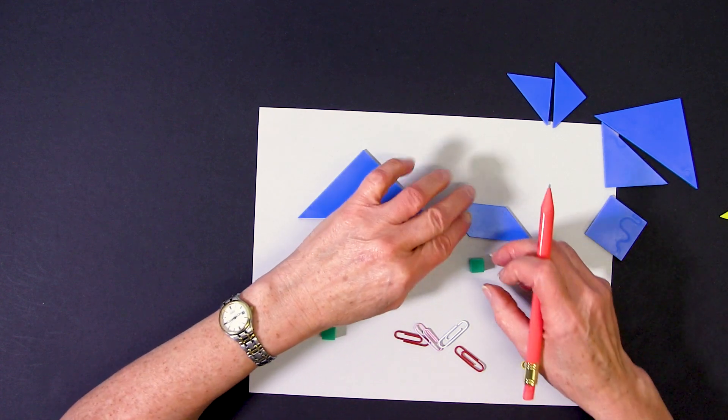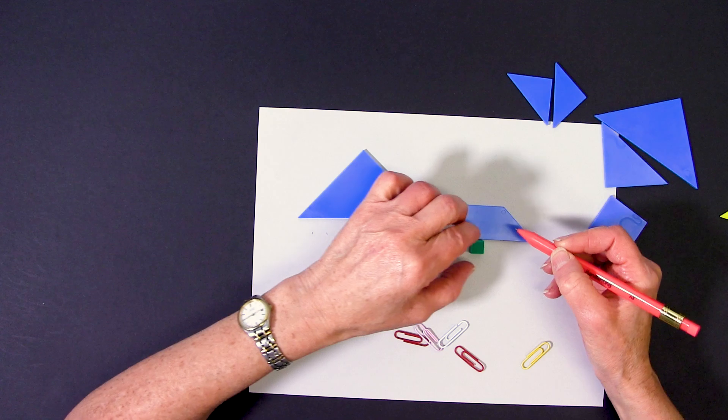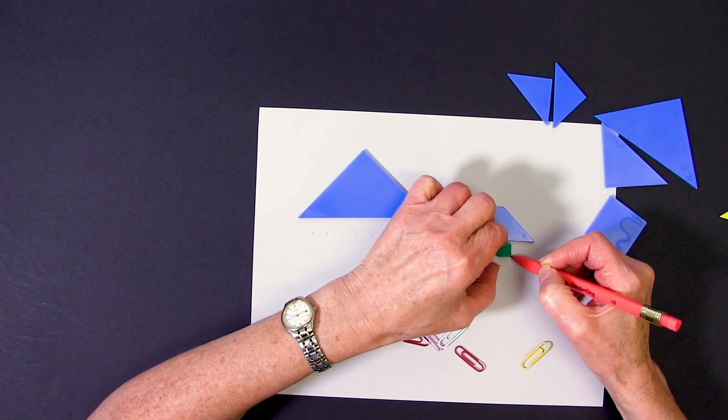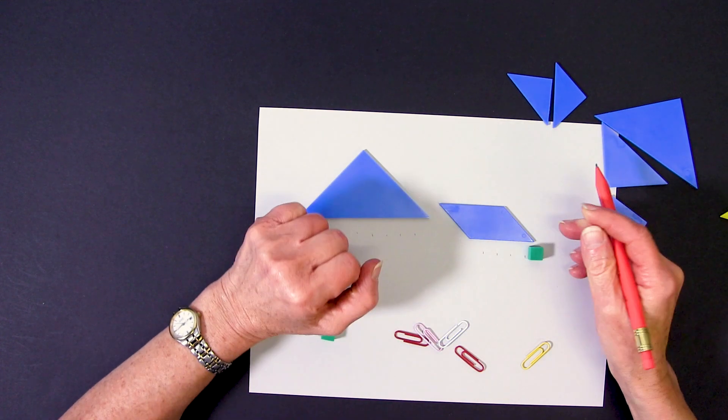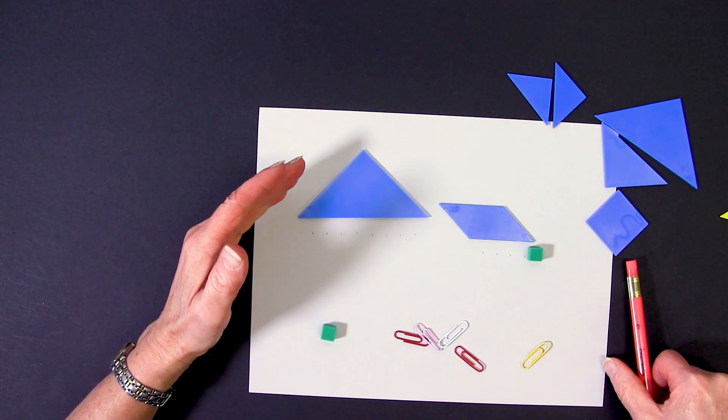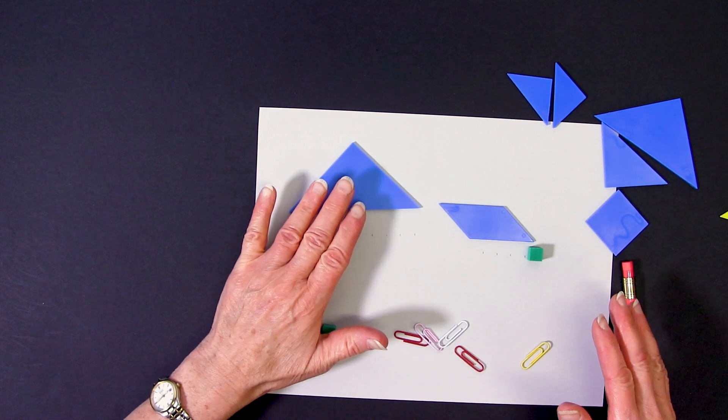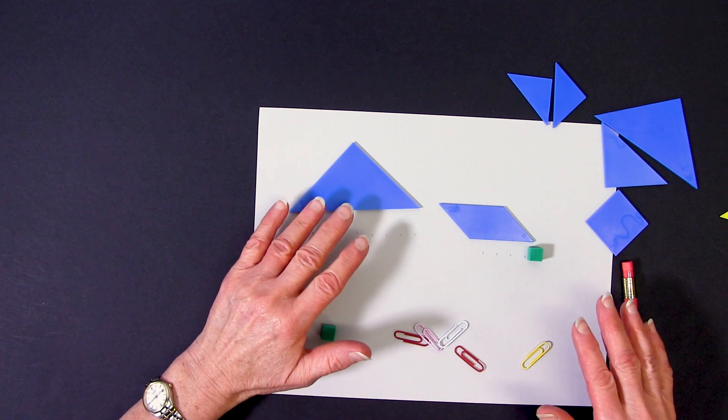And then I could do the same thing with this length that I want to compare. So there's one, two, three, four, and a bit more. And this is one way in which we can use the tangram shapes to help us with measuring length.